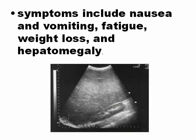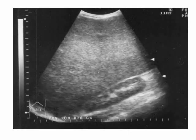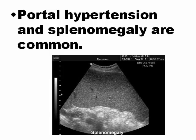Symptoms include general nausea, vomiting, fatigue, weight loss, and hepatomegaly. Portal hypertension and splenomegaly are also common. Because if there is portal hypertension, there is going to be splenomegaly. Splenomegaly is a consequence of portal hypertension, and ascites is another consequence of portal hypertension.